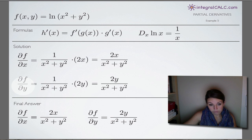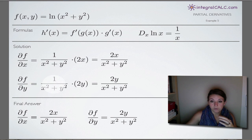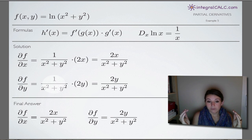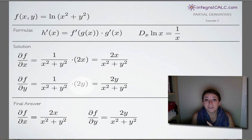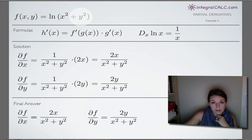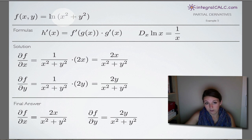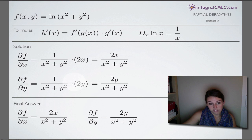Now, for the partial derivative of f with respect to y, we do the exact same thing. We take the derivative of the outside function — 1 over (x squared plus y squared) — leaving the inside alone. Then we multiply by the derivative of the inside function, x squared plus y squared. In this case, we treat y as our variable and x as our constant. So y squared becomes 2y, and x squared is 0 since x is a constant. Multiplying by the derivative of the inside function with respect to y gives us 2y.